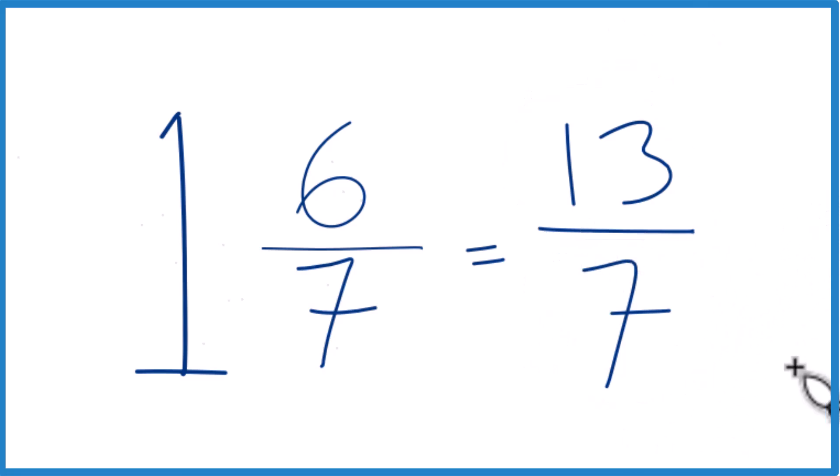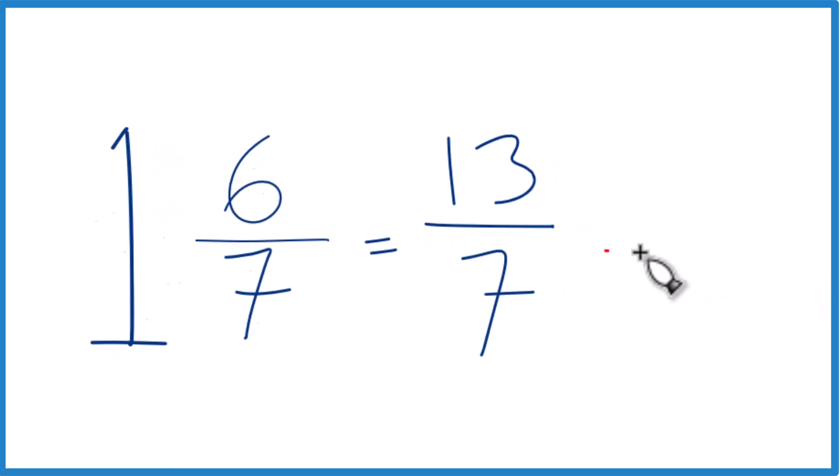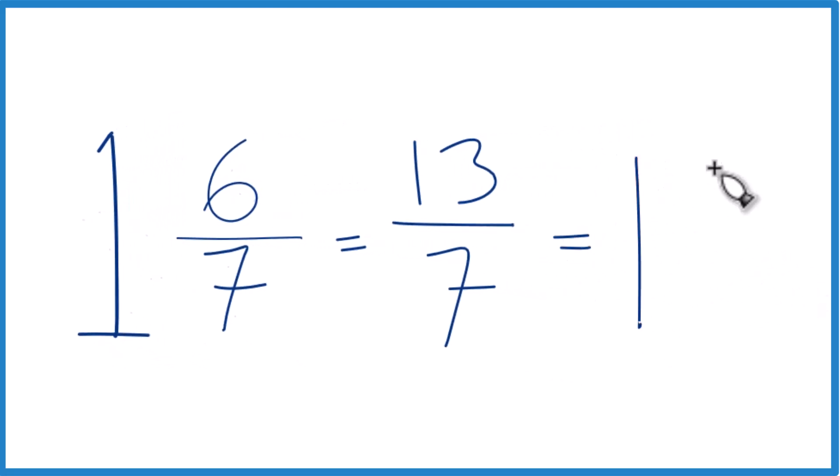And you can even check your work here. 7 goes into 13 just one time with 6 left over. Bring the denominator across, and 1 and 6 sevenths is the same as we started out with, so we're done.